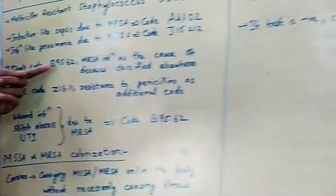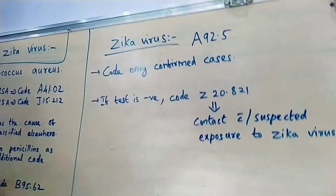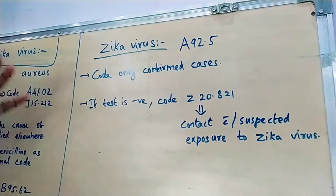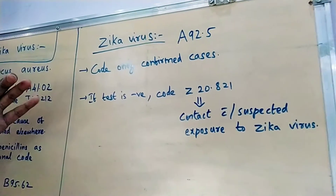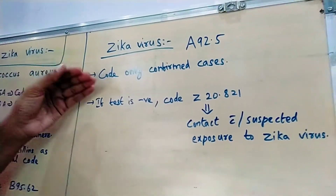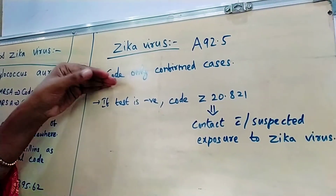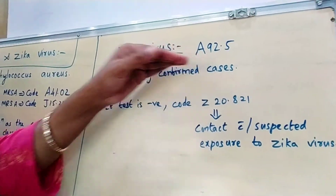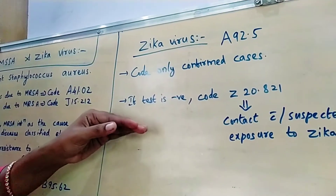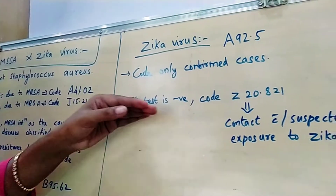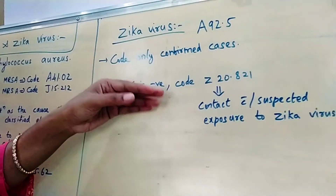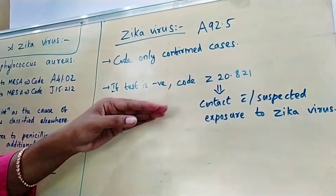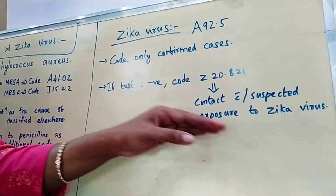Now coming to Zika virus. Like HIV, we code only confirmed cases of Zika virus. The code for confirmed Zika virus is A92.5. If a patient is coming for the Zika virus test and it is found to be negative, then give the code Z20.821, which is 'contact with or suspected exposure to Zika virus.'